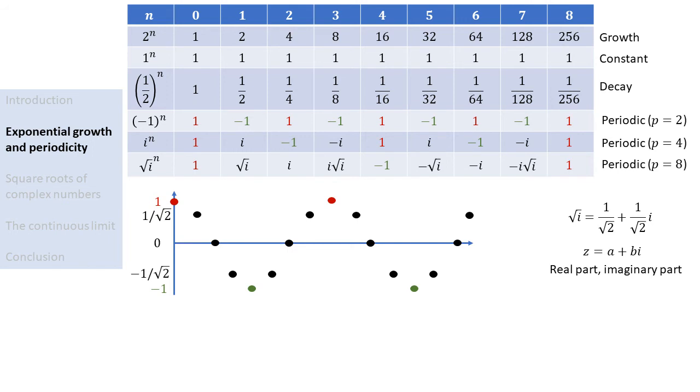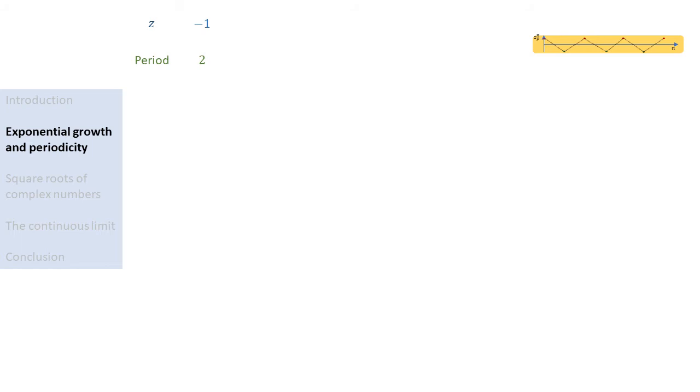So we saw that exponentiating minus 1 gives a periodic sequence with period 2. Taking the square root doubles the period, and therefore increases the resolution with which we plot the oscillation. Taking another square root increases the resolution once more. So if we keep on taking square roots, we expect to find a continuous oscillating function.